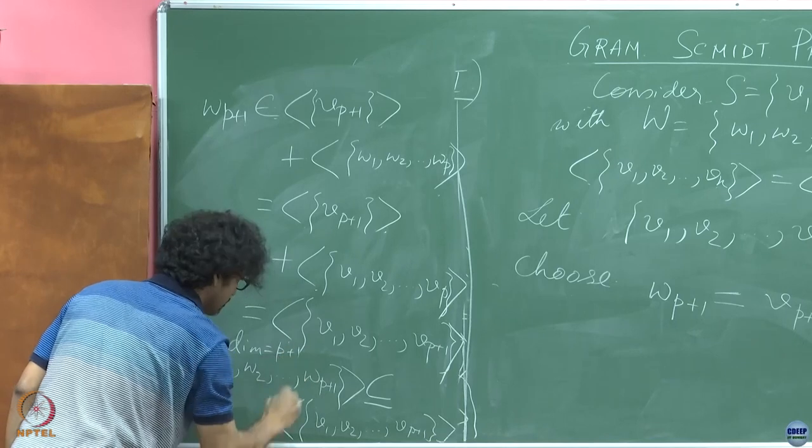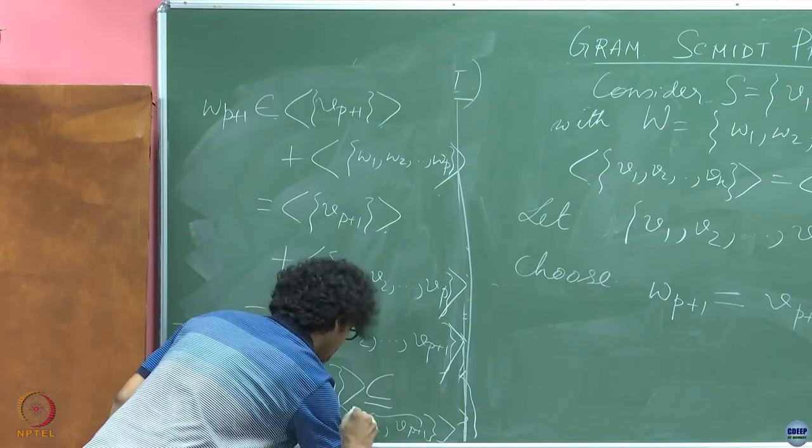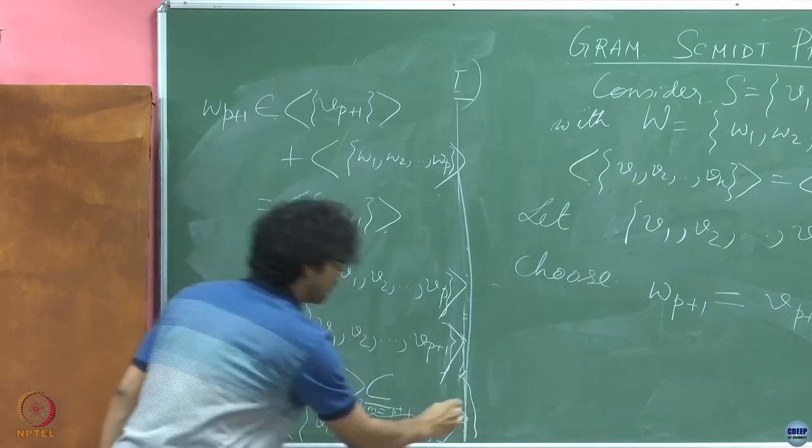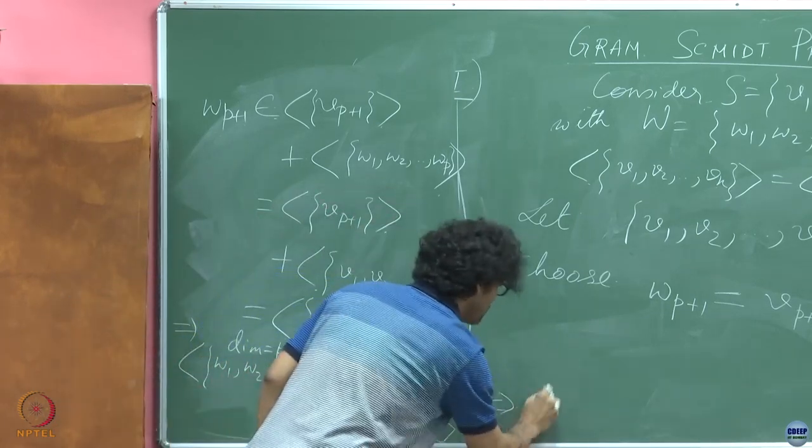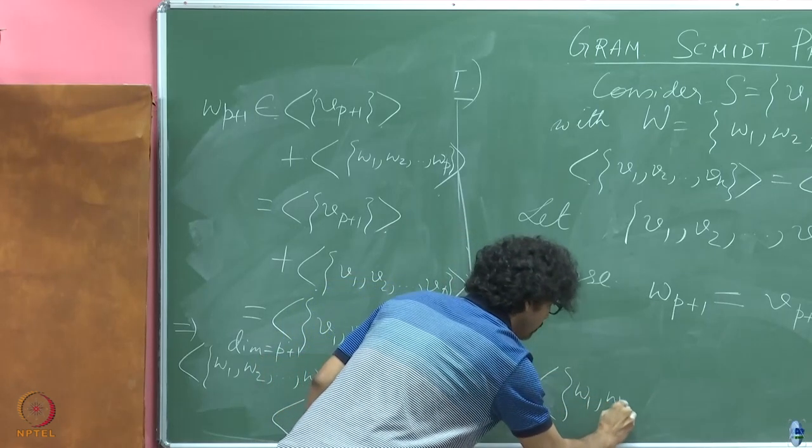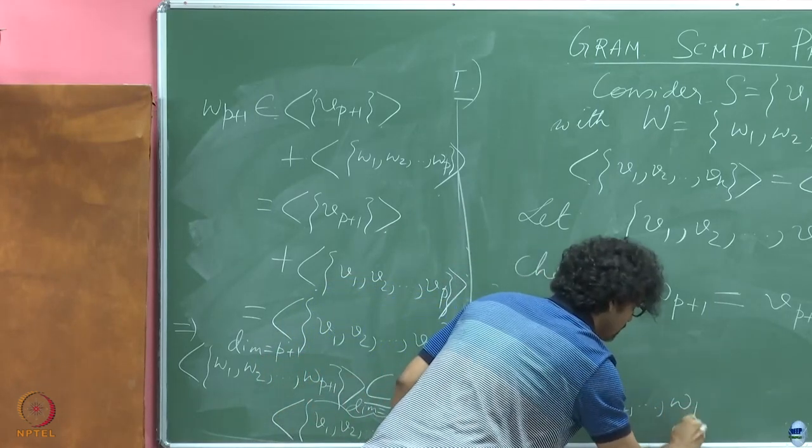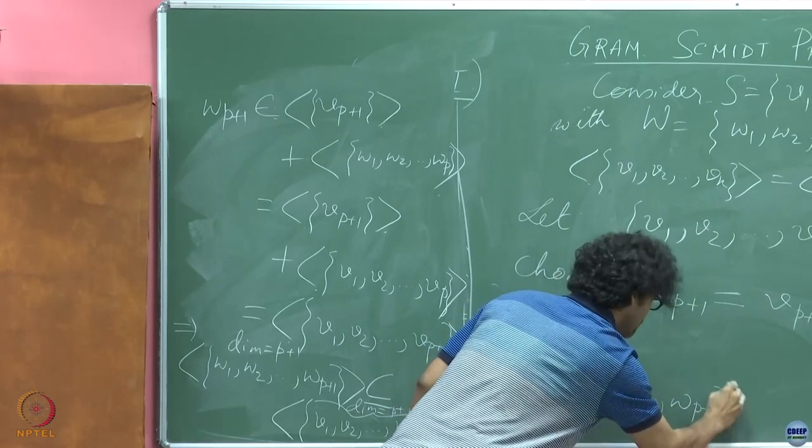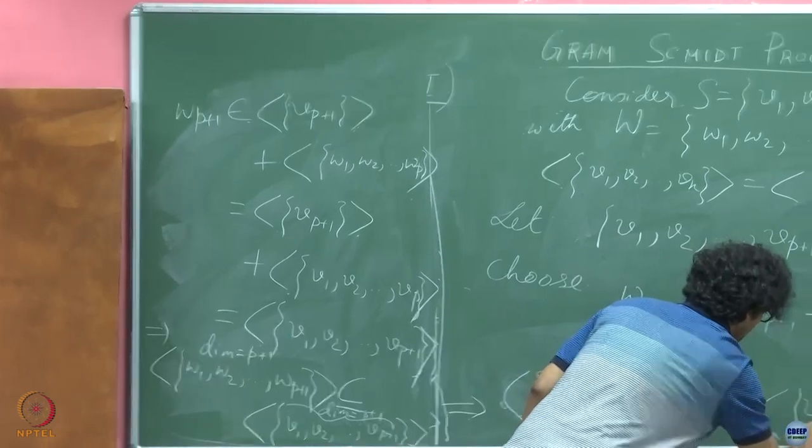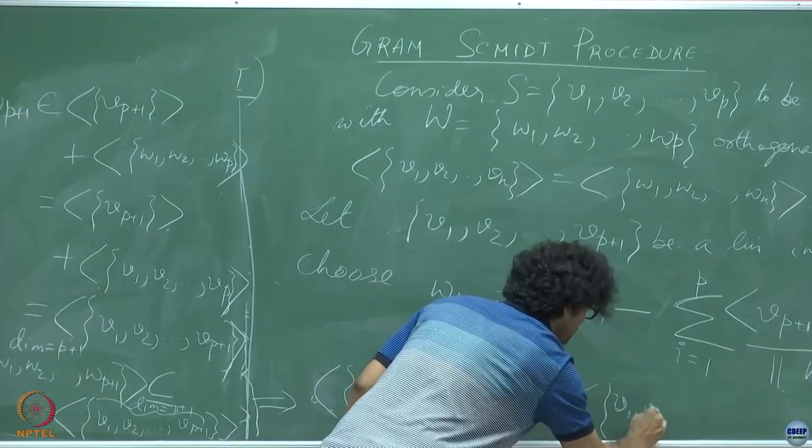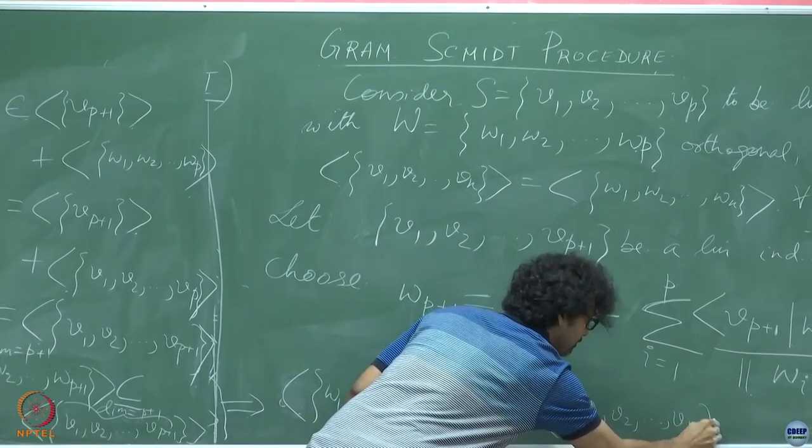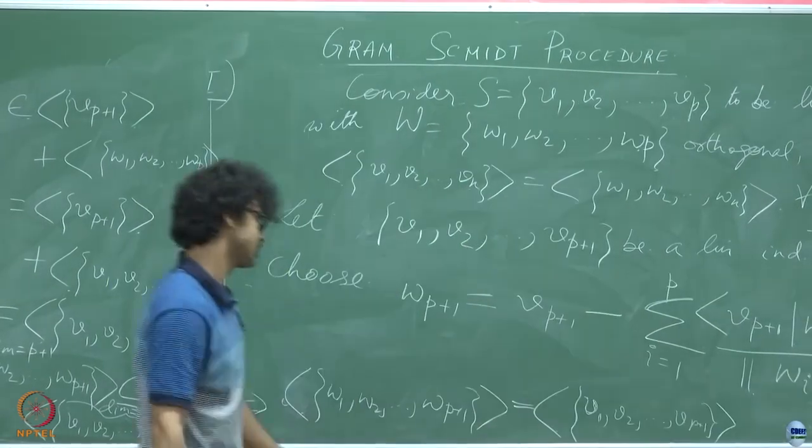Here is a subspace of dimension P plus 1, why? Because these are linearly independent because they are orthogonal and none of those vectors are 0 and here is another P plus 1 dimensional subspace, while one is contained inside the other, they cannot help but be equal. So this along with the dimension argument, this also is of dimension p plus 1. This along with the dimension argument leads us to conclude that the span of W 1, W 2 till W P plus 1 so constructed is the same as the span of V 1, V 2 until V P plus 1.